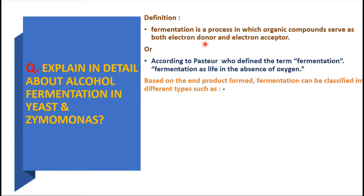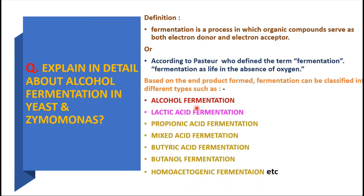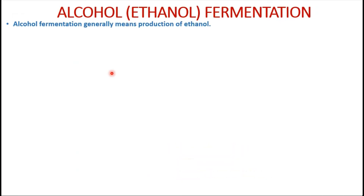Based on the different types of product formed, fermentation can be classified into different types such as alcohol fermentation, lactic acid, propionic acid, mixed acid fermentation, butyric butanol, and homofermentation, etc. Whatever the final product we are getting, we name the fermentation accordingly. In this video we are going to discuss especially alcohol fermentation.